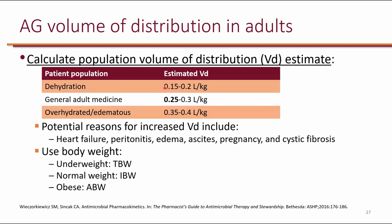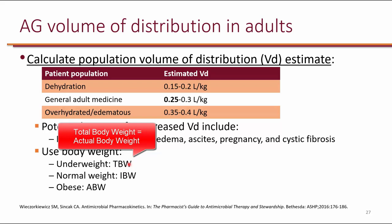If someone is dehydrated, the volume of distribution is reduced—use 0.15 liters per kilogram for this class. If someone is overhydrated, the volume of distribution is increased—use 0.35 liters per kilogram. Reasons for fluid overload include heart failure, peritonitis, edema, ascites in patients with cirrhosis, pregnancy, and cystic fibrosis. For weight selection in Vd calculations: normal patients use ideal body weight; underweight patients use total body weight; obese patients use adjusted body weight.